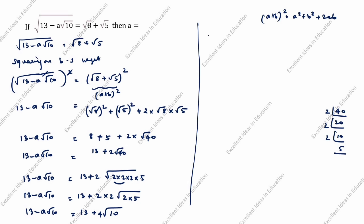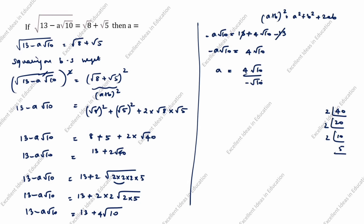Bringing the 13 from the right side to the left: 13 minus 13 cancel. So minus a root 10 equals 4 root 10. Therefore a equals 4 root 10 divided by minus root 10. Root 10 and root 10 cancel. So a is equal to minus 4. This is the answer.